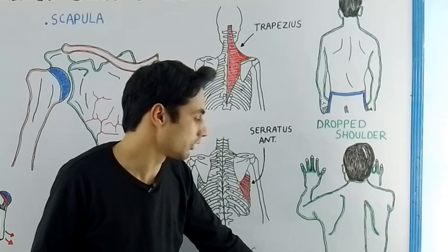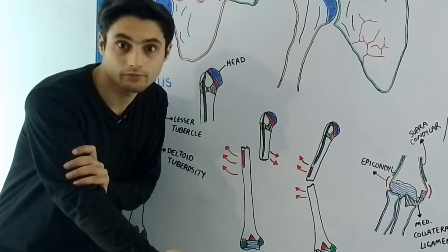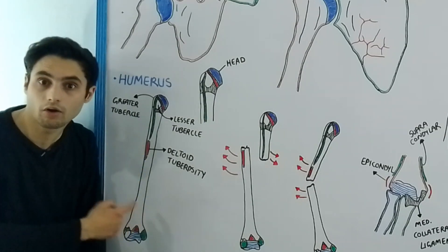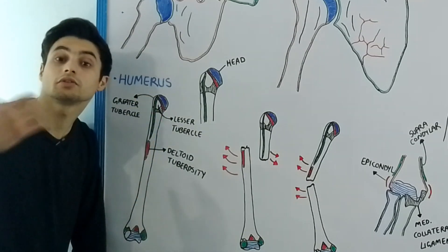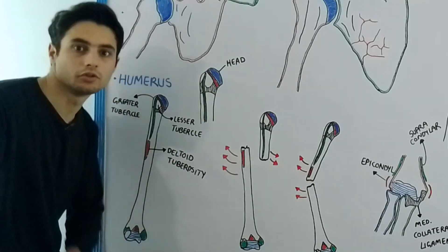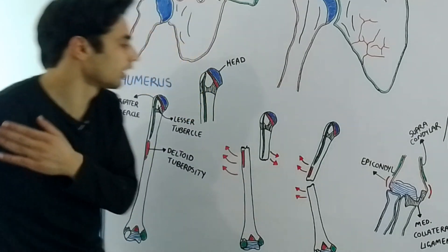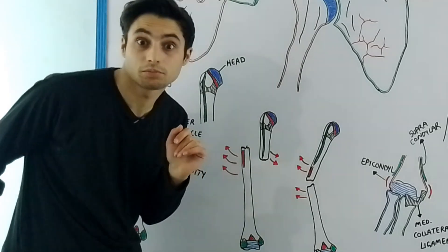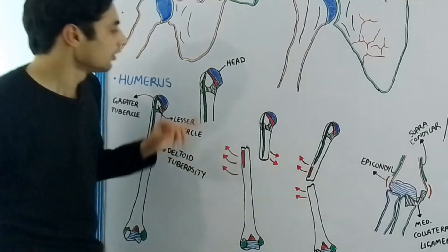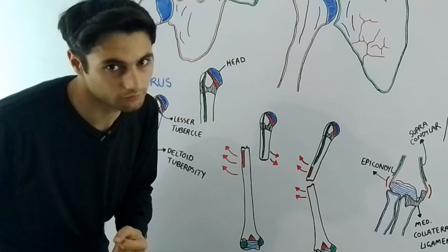Now, what happens when your humerus bone — the bone of your arm region — is fractured? The humerus bone is divided into three parts: the proximal extremity, the body or shaft, and the distal extremity. The proximal extremity consists of the head, the lesser tubercle, and the greater tubercle. The head of the humerus is damaged during anterior or posterior dislocation of the shoulder joint. The lesser tubercle, which is the attachment site of the subscapularis muscle, is also fractured during posterior dislocation. Violent contraction of muscles inserted into the greater tubercle causes fracture of the greater tubercle.